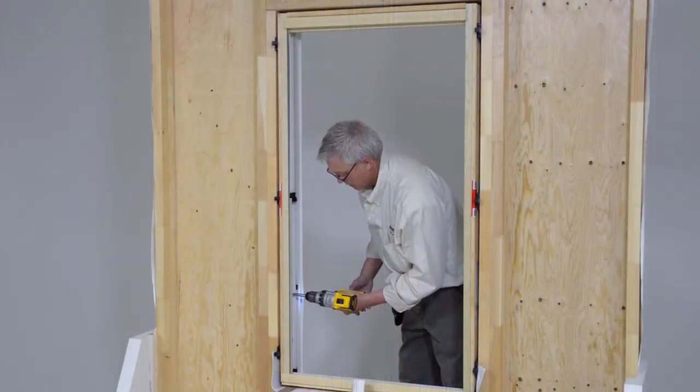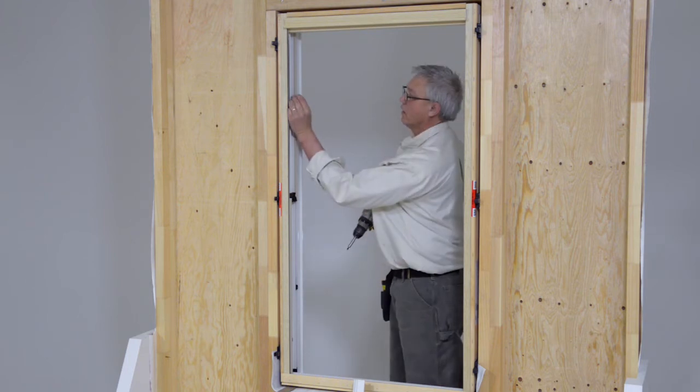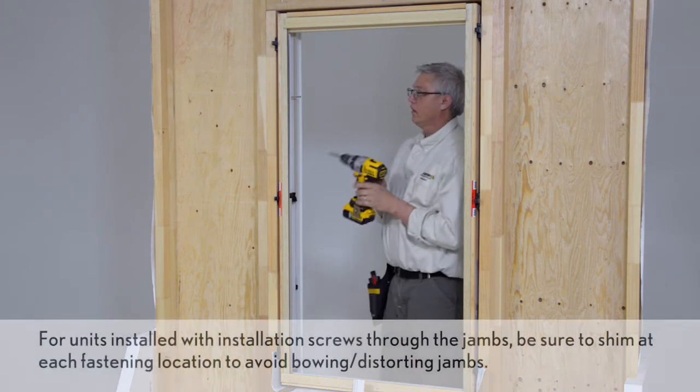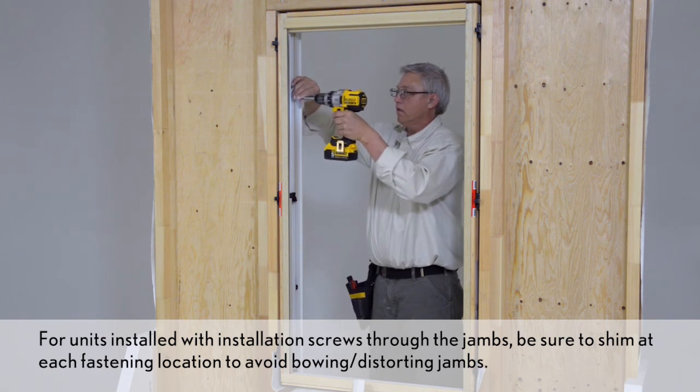Ensure the unit is centered in the opening, level, and plumb. There are pre-marked installation holes. Properly shim the unit behind the pre-marked installation holes and behind the jam receiver assembly.